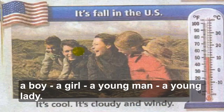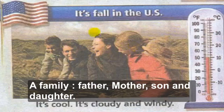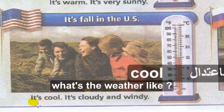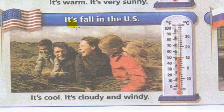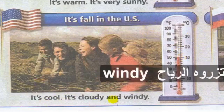Picture 3: a boy, a girl, a young man, a young lady — a family. Father, mother, son, daughter. It's fall in the USA — autumn, fall. What is the weather like? It's cool and cloudy, not sunny. It's windy — wind. The temperature is 10 degrees. It's fall in the US — it's cool, cloudy, and windy.